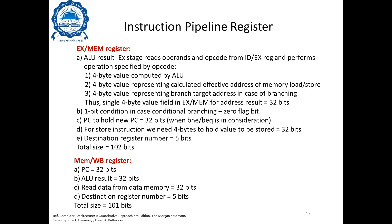The ALU result could be one of three cases: first, a 4-byte value computed by the ALU; second, a 4-byte value representing the calculated effective address of a memory load or store; or third, a 4-byte value representing the branch target address for branching instructions. Therefore, you need a single 4-byte (32-bit) field in the EX/MEM register for the address or result. The second field is a 1-bit condition flag for conditional branches.